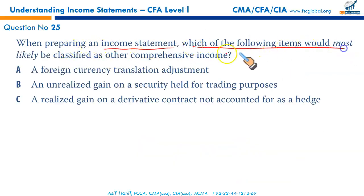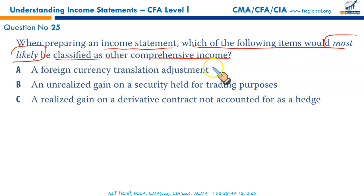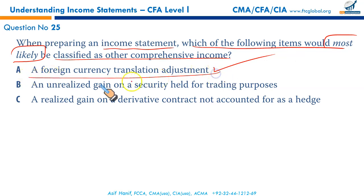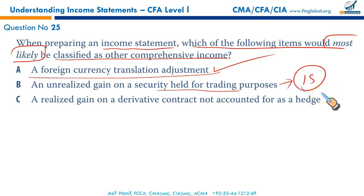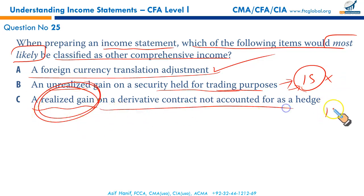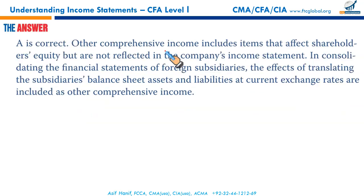Which item would most likely be classified as other comprehensive income? Foreign currency translation adjustments — yes. Available-for-sale debt securities gains and losses — yes. Effective portion of cash flow hedge gains and losses — yes. Defined benefit post-retirement plan gains and losses — yes. However, unrealized gains and losses on trading securities go to the income statement, not OCI. A realized gain also goes to the income statement. So the correct option is A.